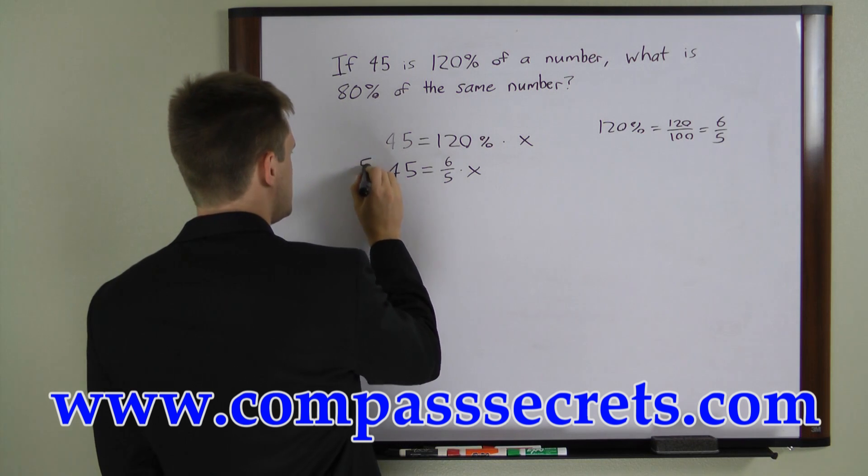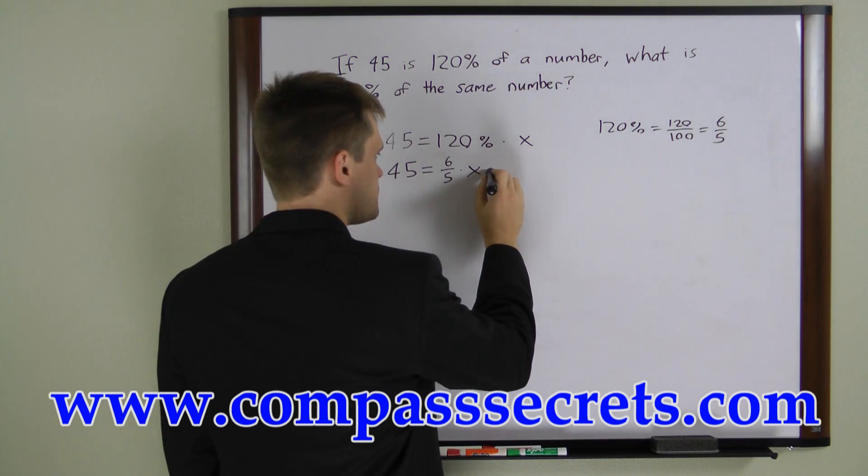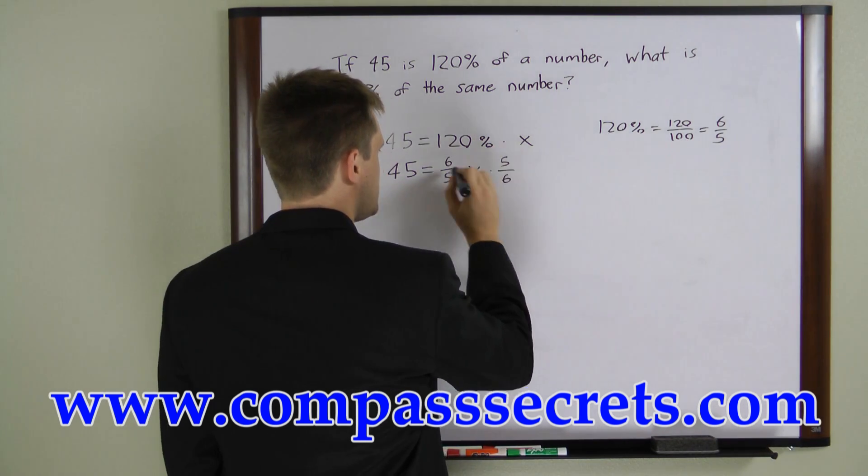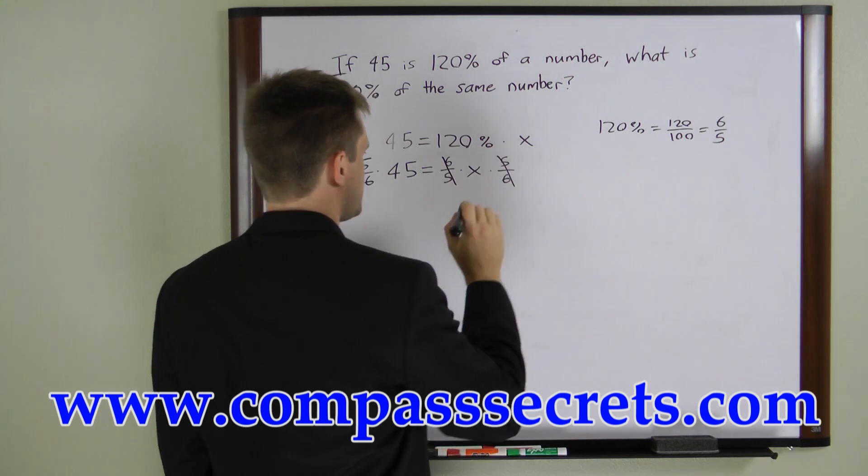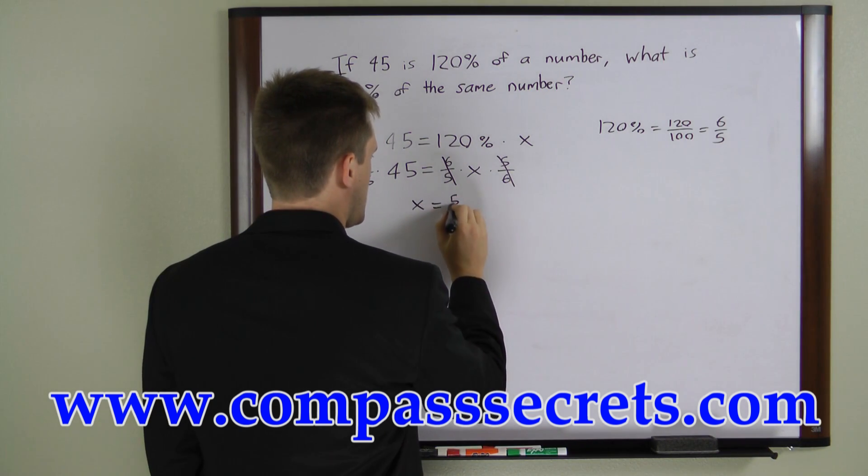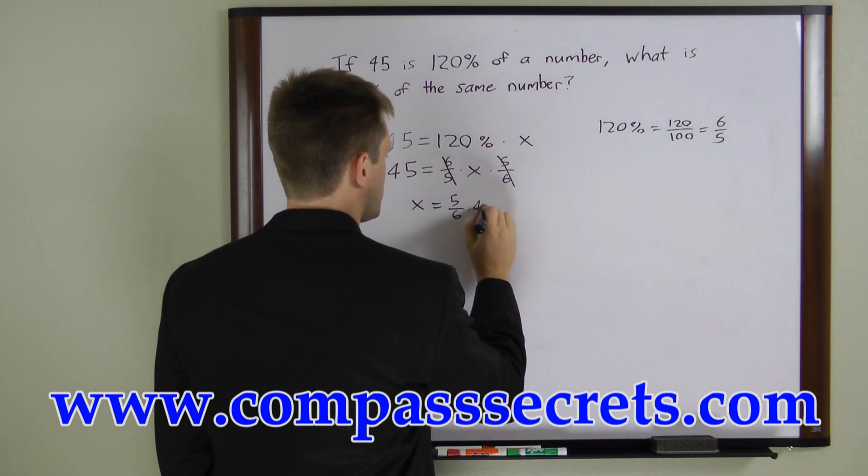Now we can multiply both sides by 5 over 6, and that will cancel this to give us x equals 5 over 6 times 45.